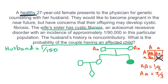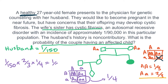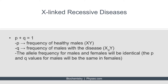The probability of the husband being a carrier is 1 over 150, and the probability of the wife being a carrier is 2 over 3. We need to calculate the probability of them having a child who inherits both recessive alleles. If both parents are carriers, the probability of having a child with an autosomal recessive disease is 1 over 4. Putting it all together: 1 over 150 times 2 thirds times 1 fourth equals 1 over 900, or 0.0011.